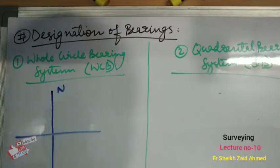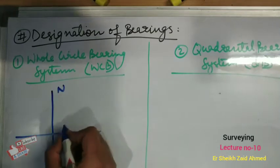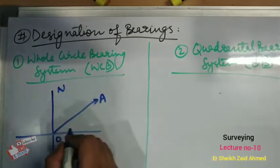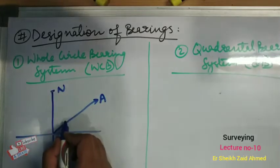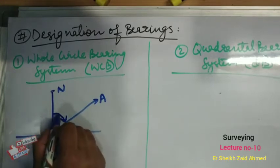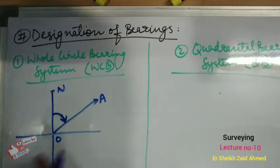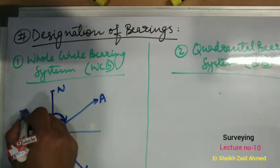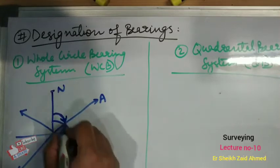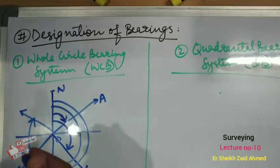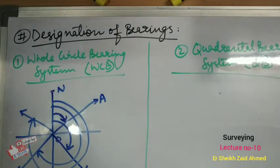For example, if this is our north and this is our south, and this is our line OA, if we take the bearing of the line with respect to the north end, then this bearing will be called the whole circle bearing. Similarly we can have lines in different quadrants, and in all quadrants we will take reference as north — in no way will we take the reference as south.